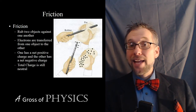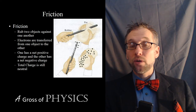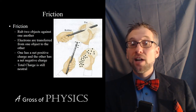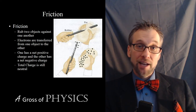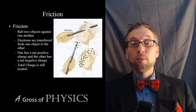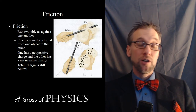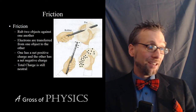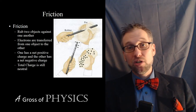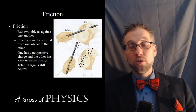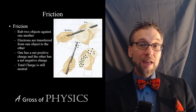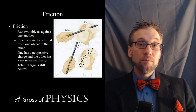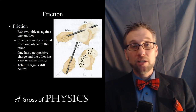If both objects started off neutral, because of conservation of charge, one object would have a negative net charge at the end and the other would have an equal positive charge. This is just a way for us to rub electrons off of one another, and then the object becomes charged because of that.